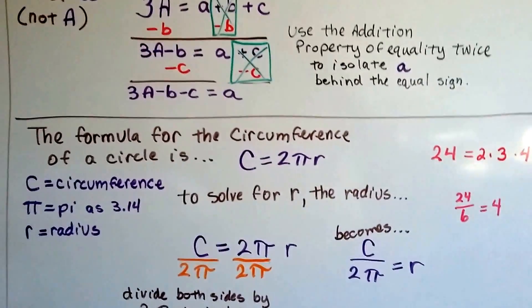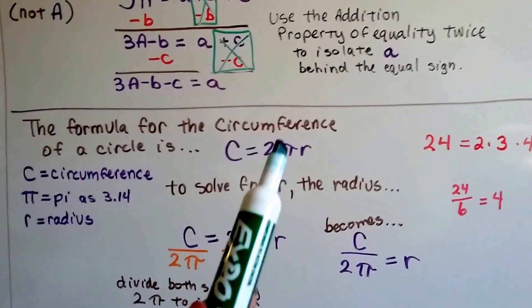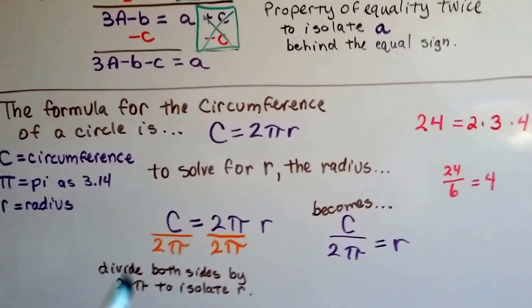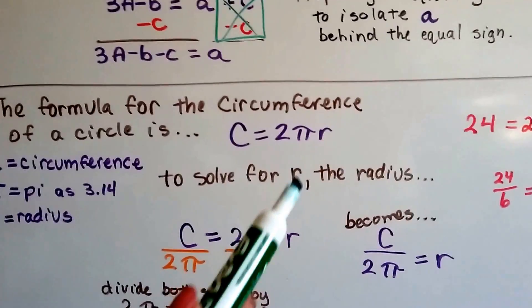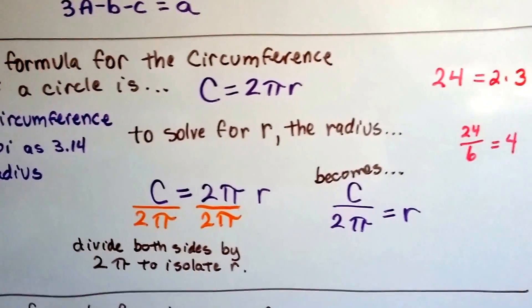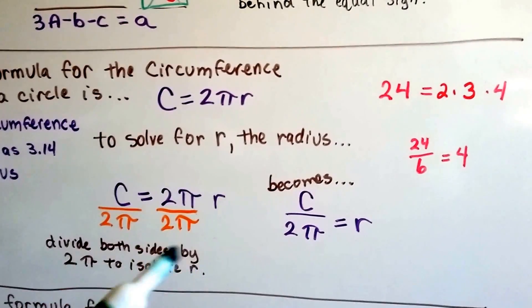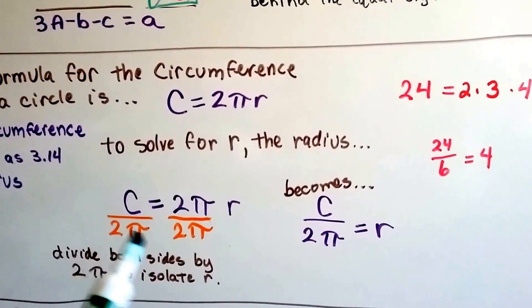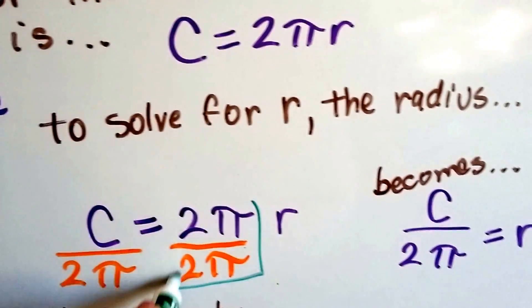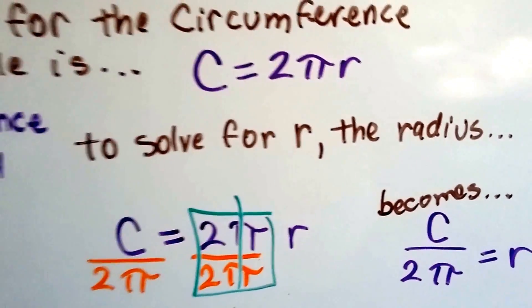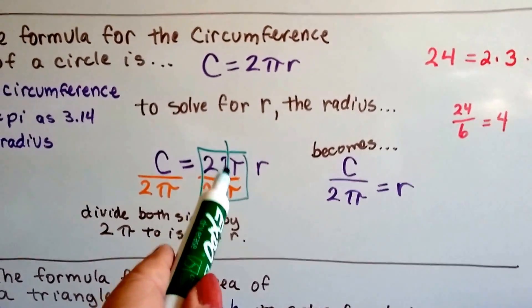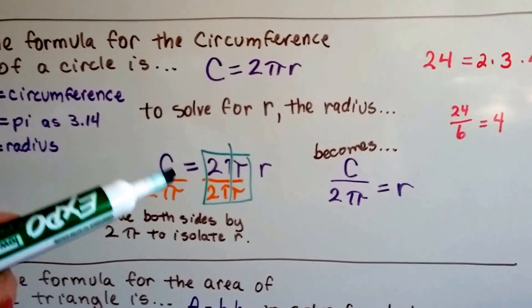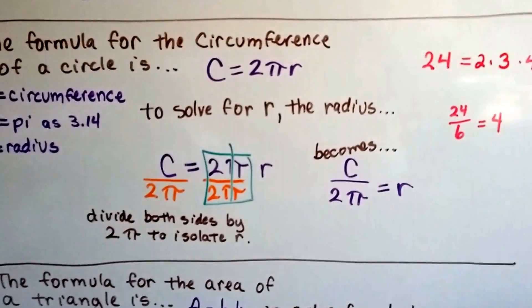Now the formula for the circumference of a circle is C for circumference equals 2 times pi as 3.14 times the radius, R. And if we don't want to solve for the circumference, if we want to solve for the radius, we can change the formula around. So here's the C equals 2 pi R. If we divide both sides of the equation by the 2 pi, this becomes an invisible 1, the identity property. It cancels out as a 1 and then this side of the equal sign is 1 times R, which is an R, and then this sign is C divided by 2 times pi. We change the formula.